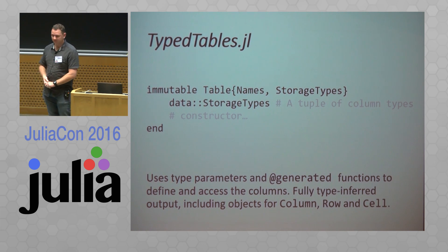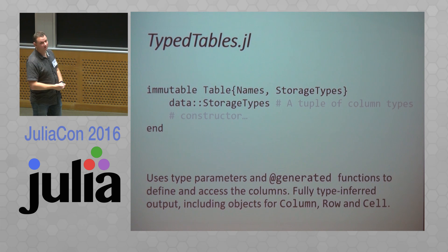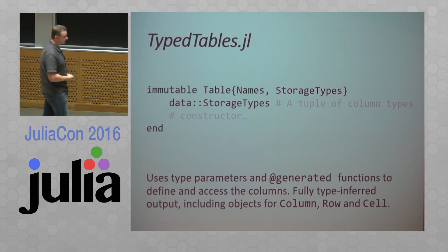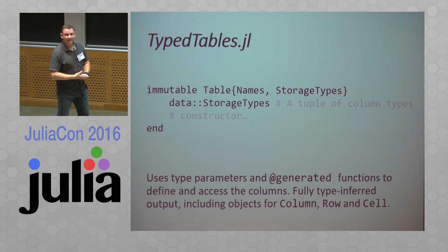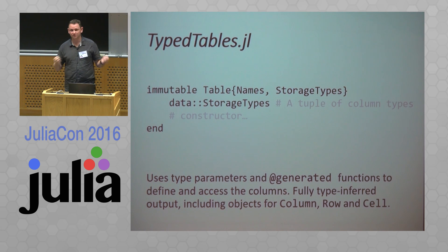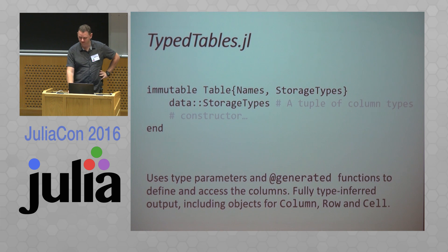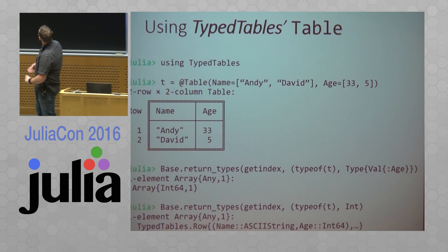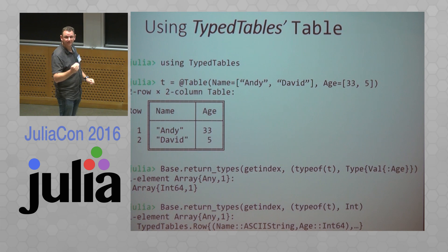So in TypeTables we store the columns in a very similar way, except instead of as a vector of columns we store it as a tuple of columns. In Julia that's just enough — that's already enough to get you strong type information about your columns. We also have in the parameters the names — it's a tuple of symbols in this case — which lets you access the right column using that.